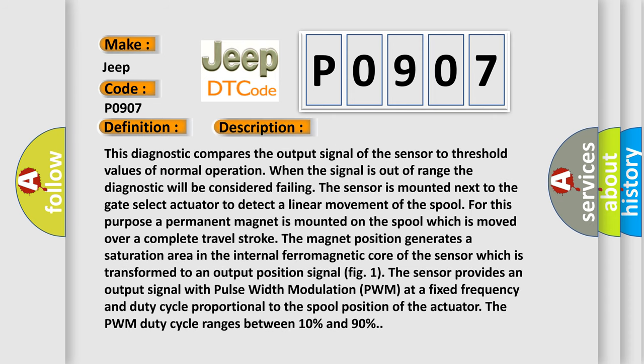This diagnostic compares the output signal of the sensor to threshold values of normal operation. When the signal is out of range, the diagnostic will be considered failing. The sensor is mounted next to the gate select actuator to detect a linear movement of the spool. A permanent magnet is mounted on the spool, which is moved over a complete travel stroke. The magnet position generates a saturation area in the internal ferromagnetic core of the sensor, which is transformed to an output position signal. The sensor provides an output signal with pulse width modulation (PWM) at a fixed frequency and duty cycle proportional to the spool position of the actuator. The PWM duty cycle ranges between 10% and 90%.